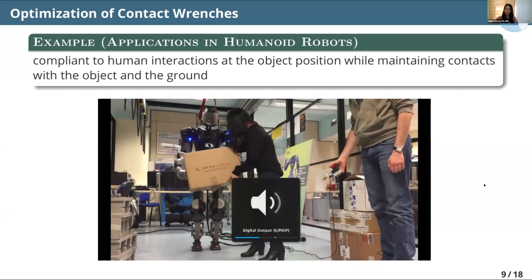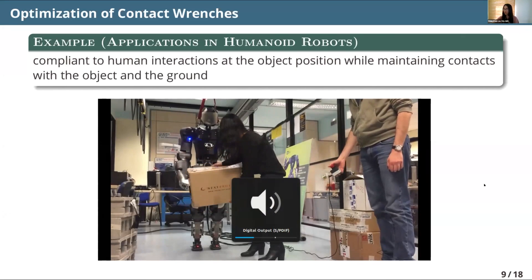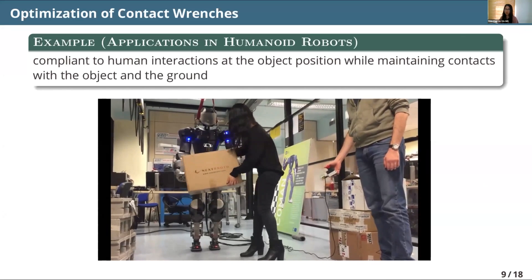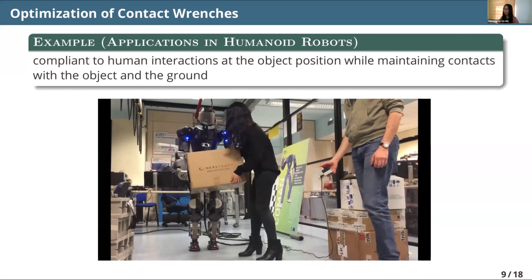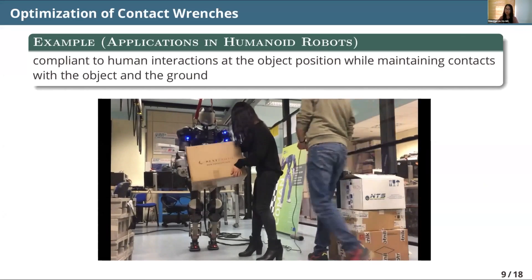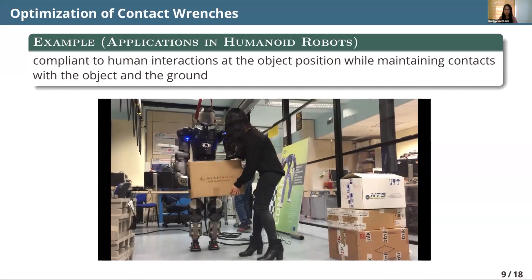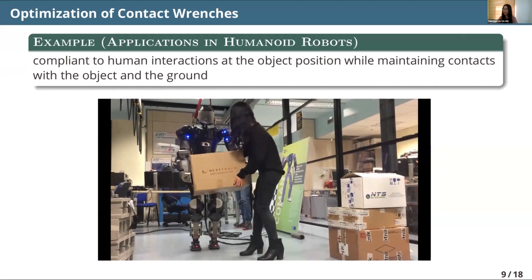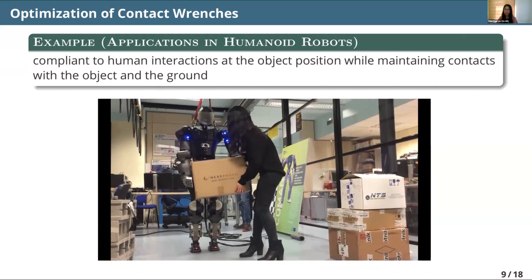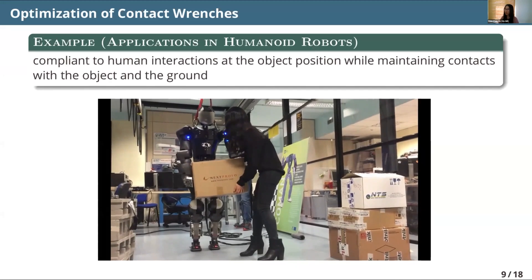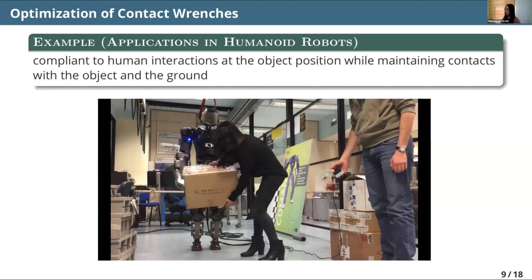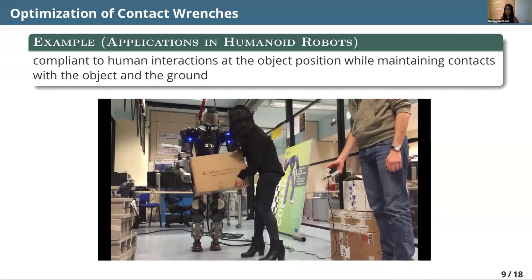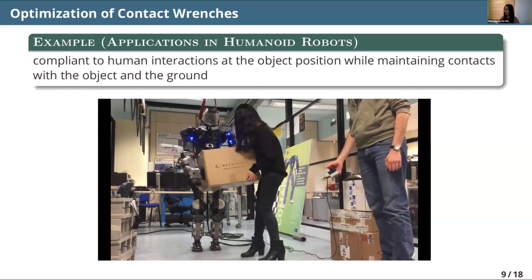We liked this idea so much we applied it to human exoskeletons as well. In this case, you see a human exoskeleton holding an object, and we are trying to achieve something similar: the robot can be compliant to human interaction, but at the same time it knows it needs to grasp the object firmly and maintain contact force with the floor.